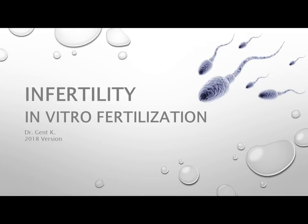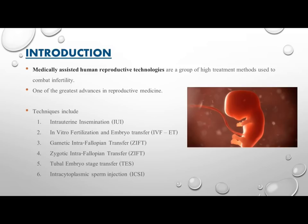Infertility and In Vitro Fertilization — Introduction. Medically assisted human reproductive technologies are a group of high-tech treatment methods used to combat infertility, one of the greatest advances in reproductive medicine. Techniques include intrauterine insemination (IUI), in vitro fertilization and embryo transfer (IVF-ET), gamete intrafallopian transfer (GIFT), zygote intrafallopian transfer (ZIFT), tubal embryo stage transfer (TEST), and intracytoplasmic sperm injection (ICSI).